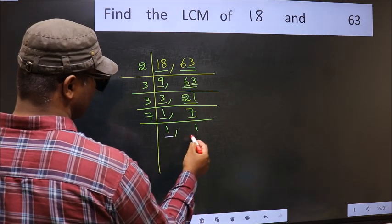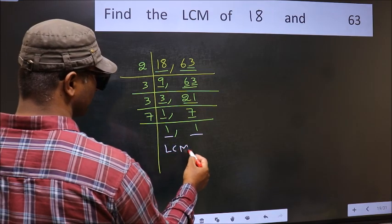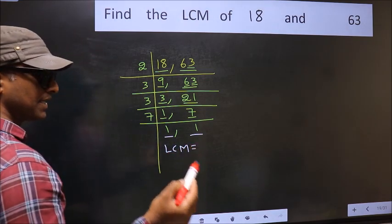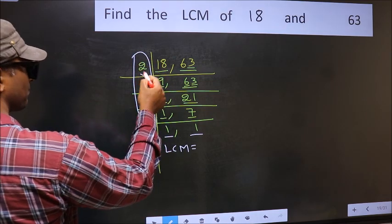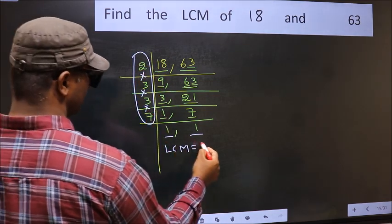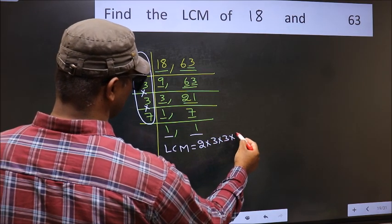So we got 1 in both the places. So our LCM is the product of these numbers. That is 2 into 3 into 3 into 7.